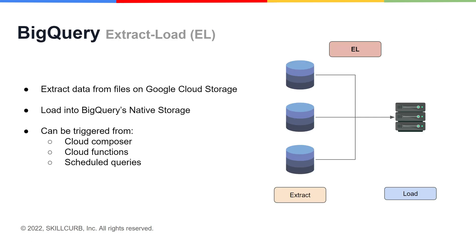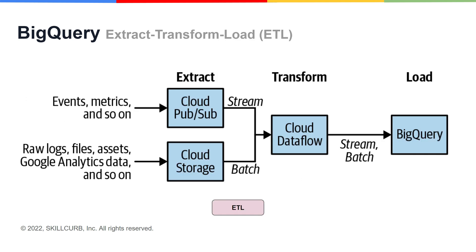Looking at it architecturally, EL is used to extract data from files on Google Cloud Storage and then load it into BigQuery's native storage. You can trigger this from Cloud Composer, Cloud Functions, or scheduled queries. You would use extract load when you have to make a batch load of historical data or scheduled periodic loads of log files, for example once a day.